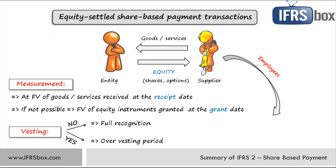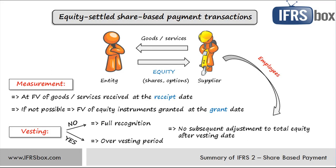IFRS 2 prohibits subsequent adjustments to total equity after the vesting date, but it allows transfers within individual equity components. If, for example, some share options are not exercised, an entity does not reverse share option rates but adjusts this situation as a transfer within equity.